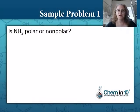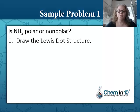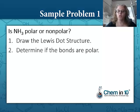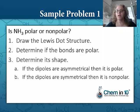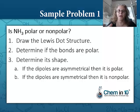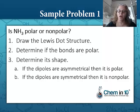So let's look at a sample problem: is ammonia polar or nonpolar? These are the steps we have to go through to figure that out. First, we need to draw the Lewis dot structure. Second, we determine if the bonds themselves are polar. Once we know if the bonds are polar, we look at its shape. If the dipoles are symmetrical, the shapes will cancel out, making it nonpolar. If the dipoles are asymmetrical, then the molecule will be polar.